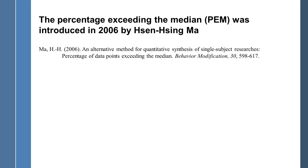In 2006, the percentage exceeding the median statistic was suggested by Sensing Ma, and you've got the citation in the journal Behavior Modification if you want to look it up.